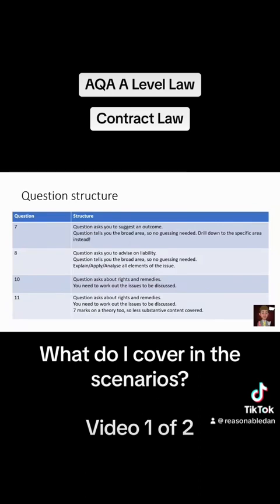Questions 7 and 8 tell you what you need to discuss, so we're not going to focus on those. Question 7 asks you to suggest an outcome and tells you the broad area of law — for example, contract law could be intention to create legal relations or consideration. Question 8 is a full problem question, for instance offer and acceptance for 10 marks, or misrepresentation, which comes up fairly often. The question asks you to advise on liability, so it's about explaining, applying, and analysing all elements.